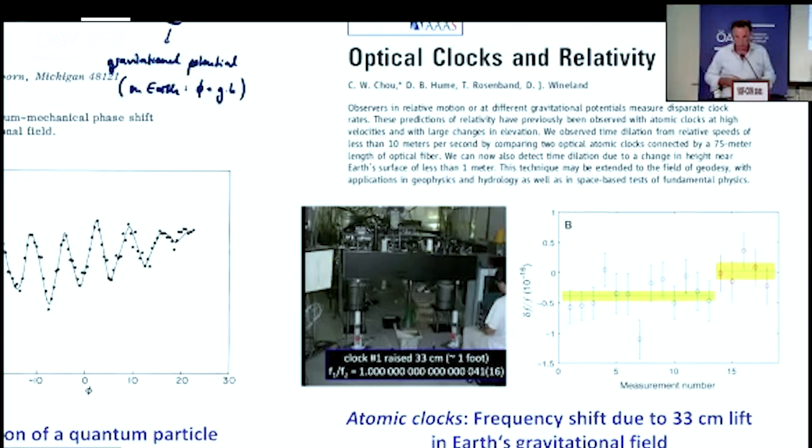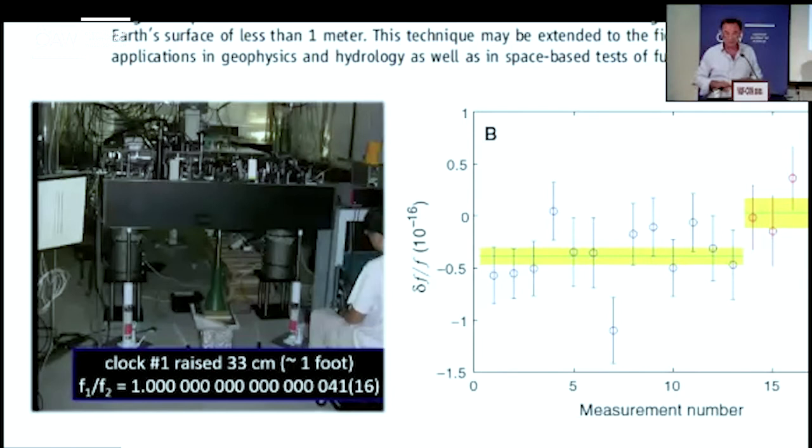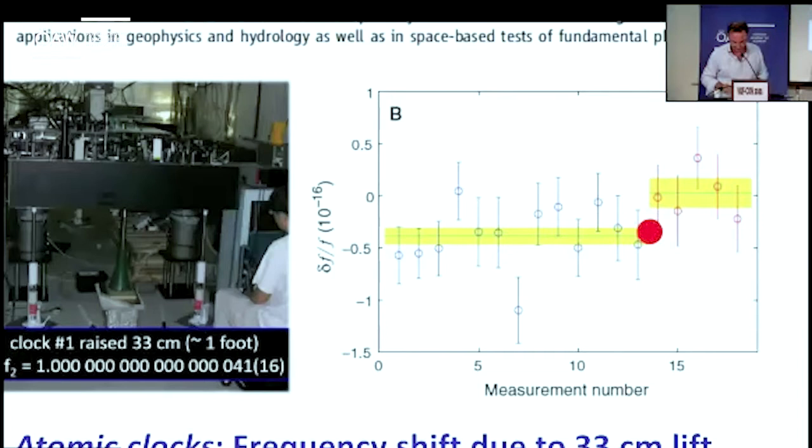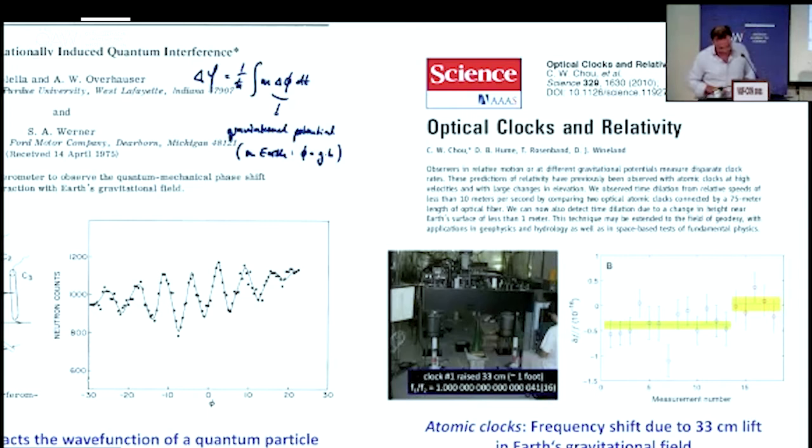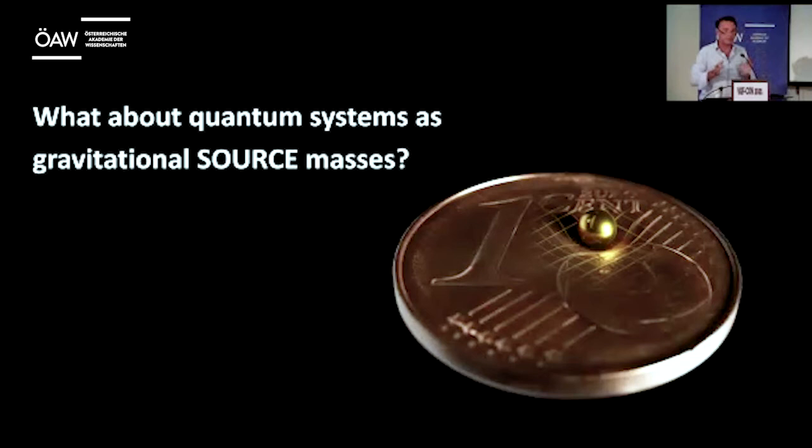The other beautiful experiment is by the Wineland's group where you look at gravitational red shift directly in experiment. It's such a beautiful experiment. They have an optical clock experiment on an optical table, and they measure a certain frequency, and then they lift the table up. You see that here, just with the car jacks, and then accordingly, the frequency changes. This is a lift of 30 centimeters that generates the change in frequency. Nowadays, these optical clocks have four or five orders of magnitude higher precision. So the question that we want to ask is, what about now quantum systems as gravitational source masses? How does gravity react to quantum systems?